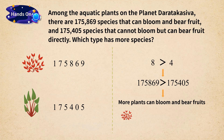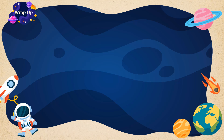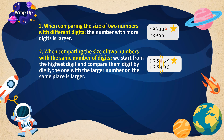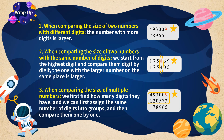Let's do a quick conclusion. Large numbers are compared in the same way as numbers within 10,000. When comparing two numbers with different digits, the number with more digits is larger. When comparing two numbers with the same number of digits, we start from the highest digit and compare them digit by digit — the one with the larger number on the same place is larger. When comparing multiple numbers, we first find how many digits they have, group those with the same digit count, and then compare them one by one.